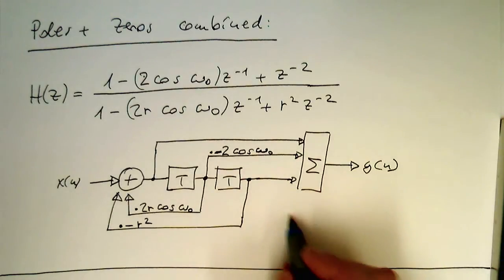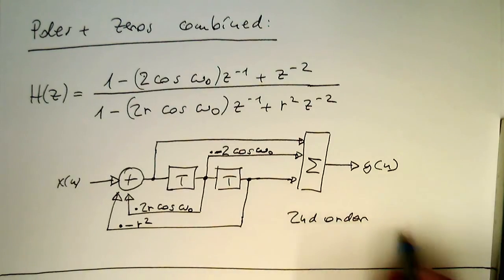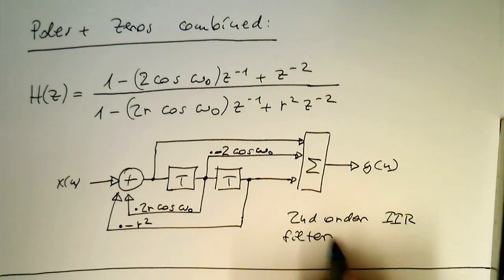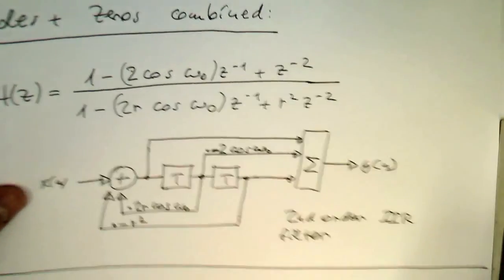So that's our second order IIR filter. And the question, the interesting question is now how does this filter behave? So let's just put all these coefficients now into Octave MATLAB to see how this works.